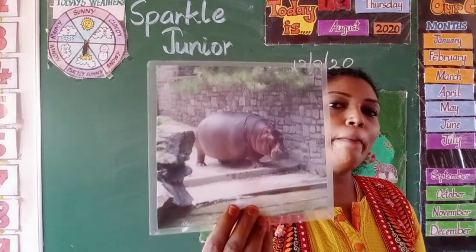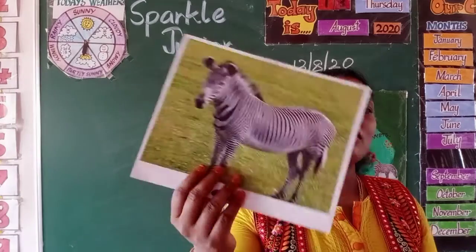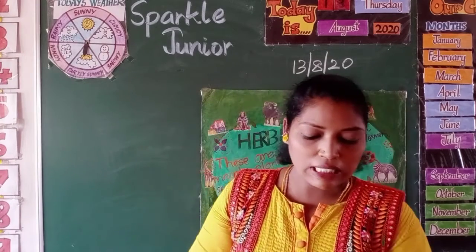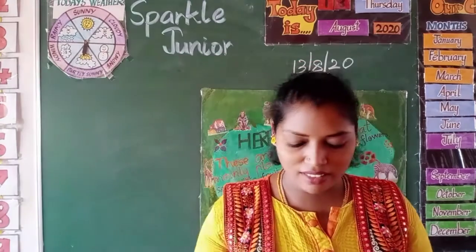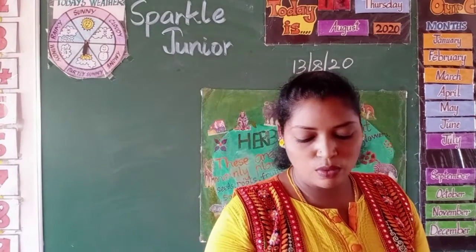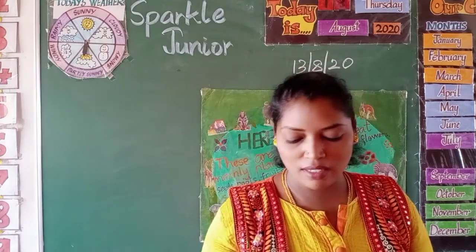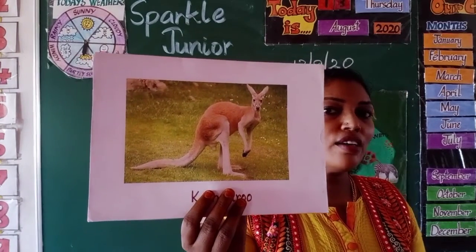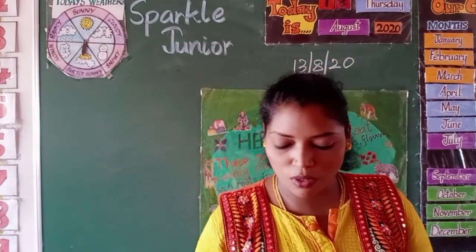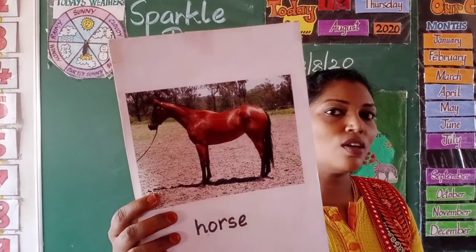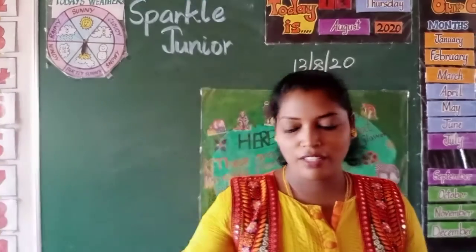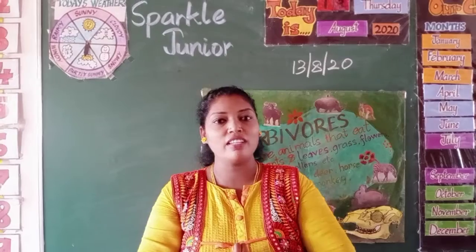Now I am going to show some more animals. This is a gazelle. What about this? It's called caribou — a deer family animal. This one is bison. What about this? Kangaroo. This is a desert animal — camel. And this farm animal — what is this? Horse.